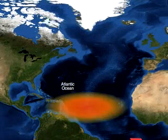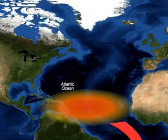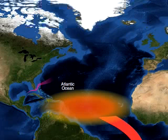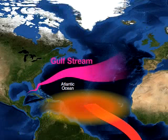Surface water at the equator is heated by the tropical sun. Trade winds created by the same heating effect push this surface water from the Gulf of Mexico towards northern Europe, also known as the Gulf Stream.